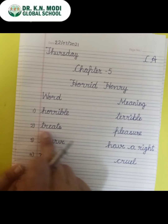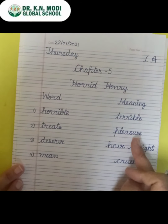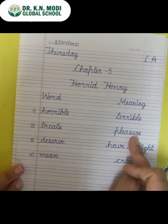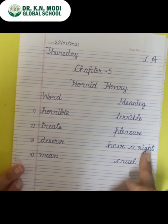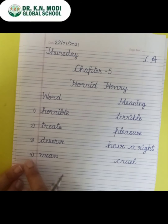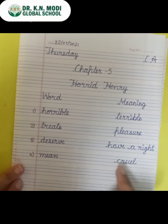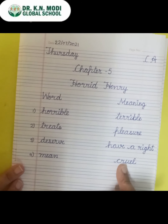Let's repeat again. First word is horrible and the meaning is terrible. Second word is treats and the meaning is pleasure. Third word is deserve and the meaning is have a right. Fourth word is mean and the meaning is cruel.